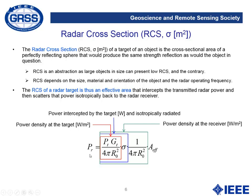The power received by the radar will depend on the transmitted power, the gain of the transmitting antenna, the distance from the radar to the target, the radar cross-section of the target that radiates isotropically intercepted power — which is once again attenuated by propagation losses — and finally it will depend on the effective area of the receiving antenna.